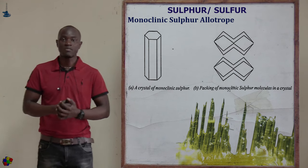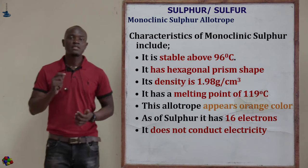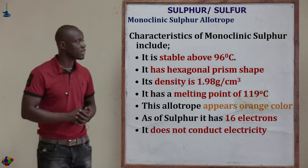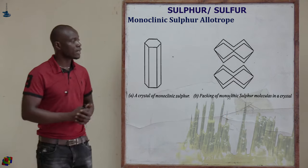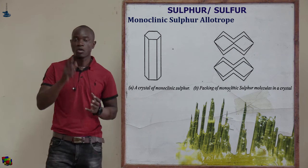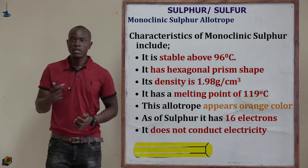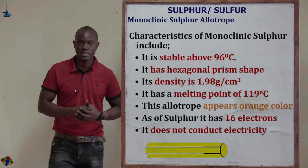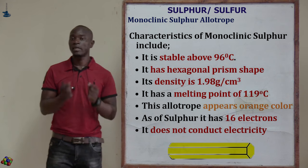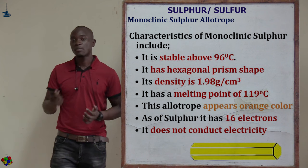The next allotrope under crystalline forms is monoclinic sulfur, also called prismatic or beta sulfur. Beta sulfur assumes the Greek letter beta and sulfur. Looking at the diagram through a hand lens, you can see its prismatic shape. Monoclinic sulfur is stable above 96 degrees Celsius. Below that temperature, it changes to rhombic sulfur. If you decrease the temperature of monoclinic sulfur below 96 degrees Celsius, you get rhombic sulfur.